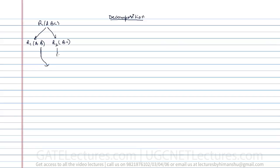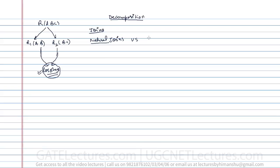When you decompose a relation, if you combine the resulting relations again, the decomposition should be lossless. Lossless means you should not get any extra attributes or lose any values compared to the original. We'll come to lossless decomposition in detail later. First, we'll discuss natural join versus cross product, and after understanding those, we'll see how to determine if a decomposition is lossless or lossy.